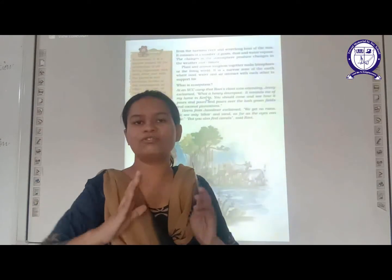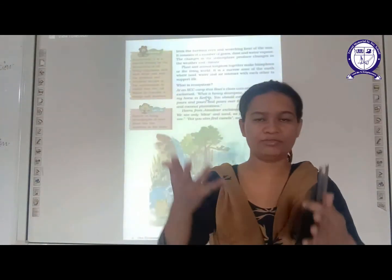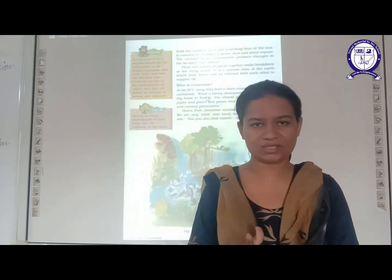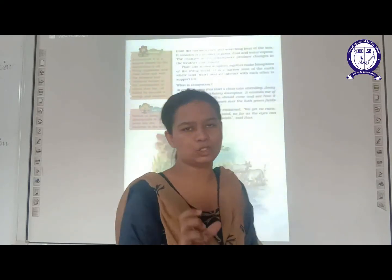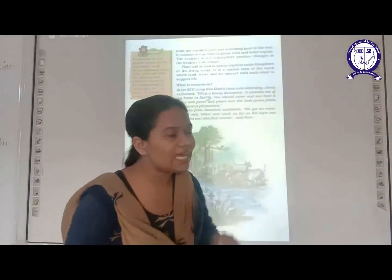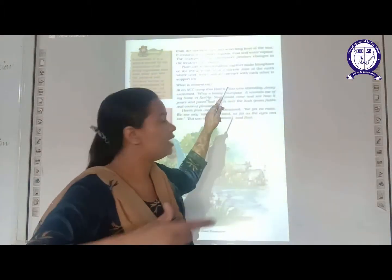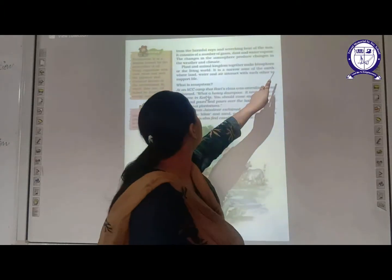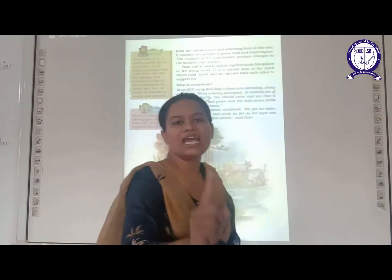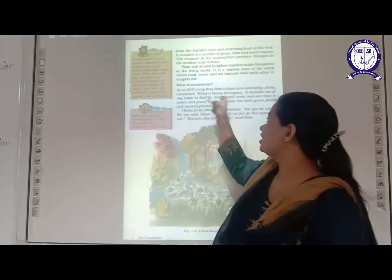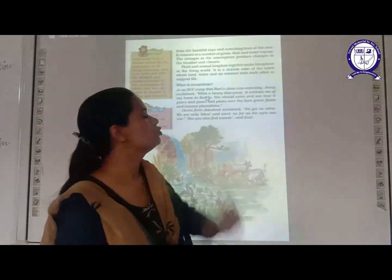Our fourth and last domain of the Earth is biosphere. You may have seen in Discovery about biodiversity — different species of plants and different species of animals. Plants and animal kingdoms together make biosphere. Biosphere is a narrow zone of the Earth where land, water and air interact with each other to support life. Life is not possible without all three of these things. They interact together, support the life system, and frame biosphere.